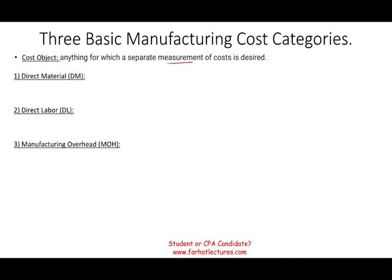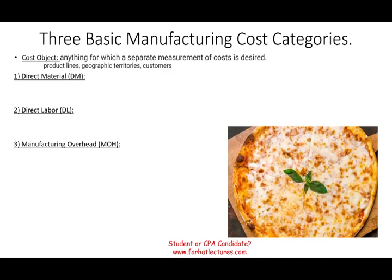What could that item be? It could be anything — a particular product line in your manufacturing facility, a geographical territory, or a customer. For example, how much each customer is costing you to maintain. For our purposes, we're going to consider as our cost object a pizza. We're going to be making cheese pizza, and based on this pizza we're going to illustrate what is direct material, direct labor, and manufacturing overhead.